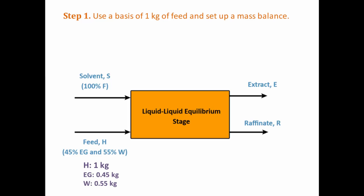We're going to call this the feed and give it a symbol H and assume we have one kilogram of it. The question also tells us that we have a solvent of pure furfural which is twice the weight of the feed H. The components entering the system are partially miscible in each other and will produce two solutions that are in mutual equilibrium.